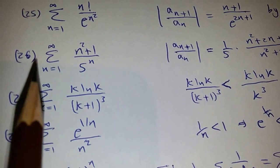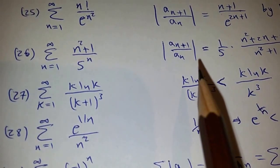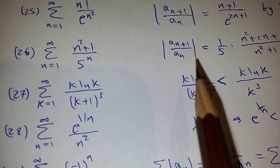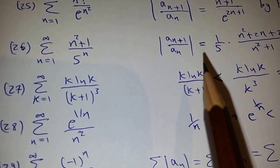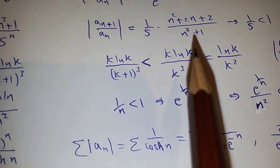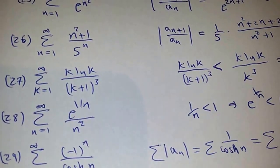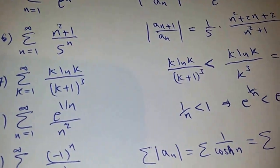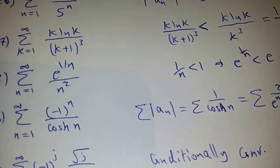Same for this series. If you use the ratio test, you will find that the limit is 1/5, because the limit of this factor is 1. Since 1/5 is less than 1, so it's absolutely convergent.